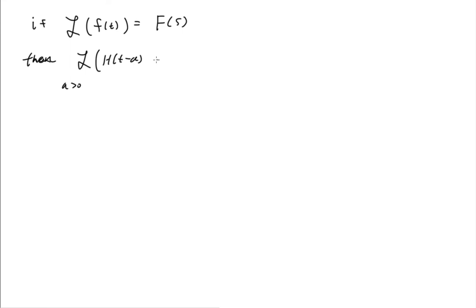It could be for a negative too, but I'll just think of time shifts to the right. f of t minus a. We can write this as e to the negative s times a times capital F of s. And this is that time-shift theorem.